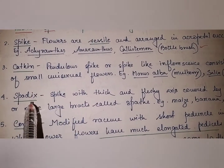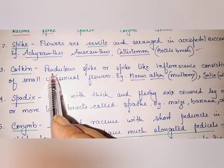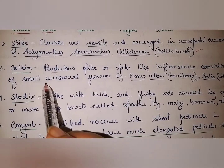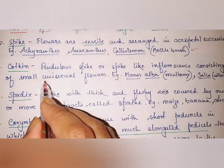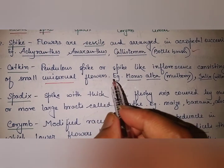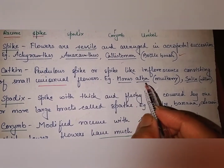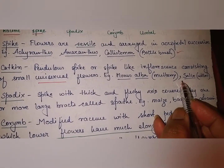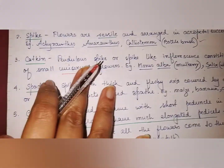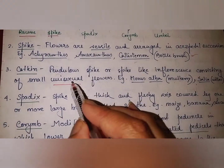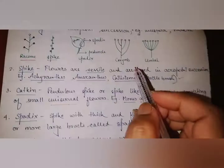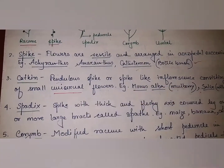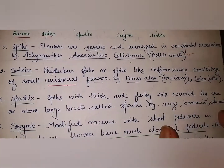Next is catkin: this is a pendulous spike or spike-like inflorescence consisting of small unisexual flowers. Remember the keyword here is 'unisexual.' It is found in Morus alba (mulberry), Salix, and Betula. In raceme the flowers are pedicellate, in spike they are sessile, and in catkin they are unisexual.